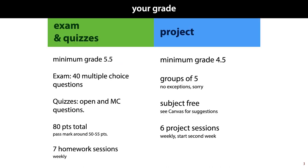Here's what that looks like in more detail. 50% of your grade will consist of the exam and the quizzes and the other 50% will consist of the project. For the exam and the quizzes you'll need to score at minimum a 5.5, and for the project at minimum a 4.5.